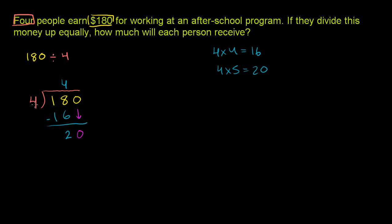Bring down the 0. Now 4 goes into 20 how many times? Well, we just wrote it over here. 4 times 5 is equal to 20. So 4 goes into 20 5 times. 5 times 4 is 20. You subtract, and you have no remainder left over.